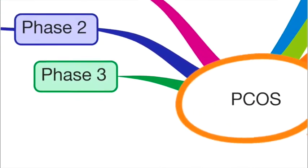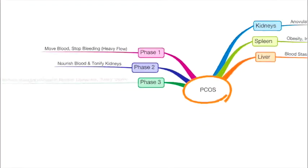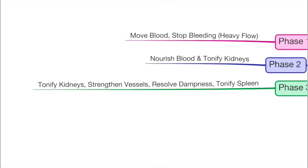Moving on, there is third phase, that is ovulatory phase. When your body is ovulating, when the egg is being released to conceive. Here, the treatment principle would be tonify kidneys because that has main to do with your reproductive system. Strengthen the vessels, resolve dampness, tonify spleen.